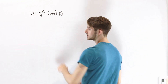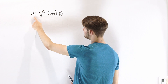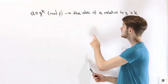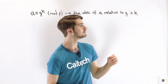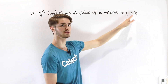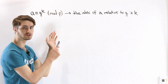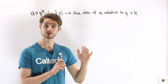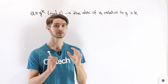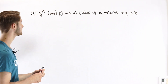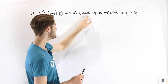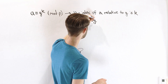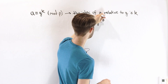When we have this congruence being true — when we have some number a being congruent to g to the k — we say that the index of the number a relative to the primitive root g is k. In order to get a better understanding of what exactly is going on here, I'm going to introduce a certain notation that's used for indices. We often talk about the index of a relative to g using the notation log base g of a.